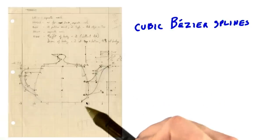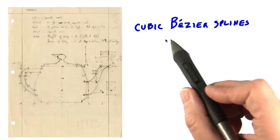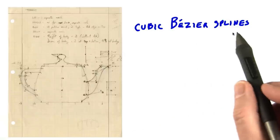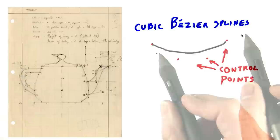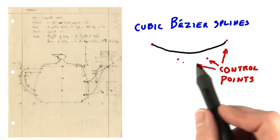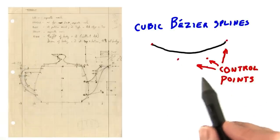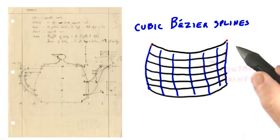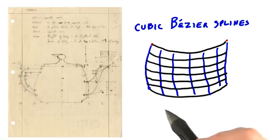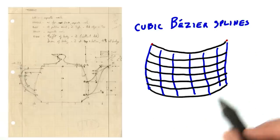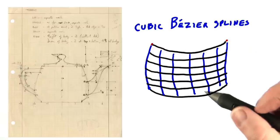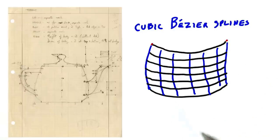He described these curves by using what are called cubic bezier splines. A spline is a fancy word for a type of curve. These spline curves are formed by carefully placing a few points called control points. A surface is then formed by using spline curves in two different directions to define a patch. See the additional course materials to learn more about this process.